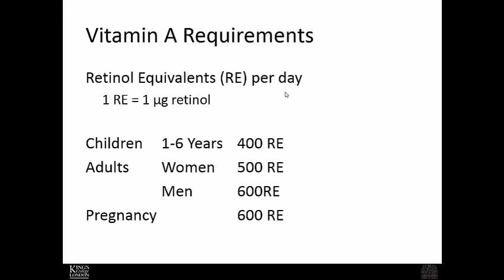Human vitamin A requirements: in children aged one to six years, roughly 400 retinol equivalents per day is sufficient to prevent deficiency symptoms. In adults, both men and women require between 500 and 600 retinol equivalents. There is no increase or only a very slight increase for pregnant women at 600 retinol equivalents, partly because vitamin A is actually a teratogen when consumed in high concentrations.